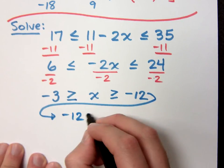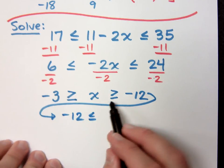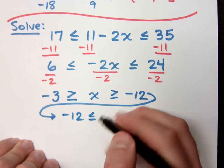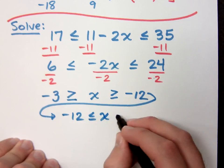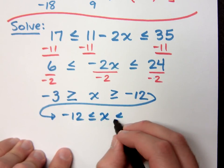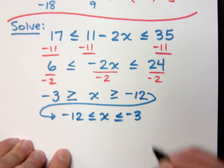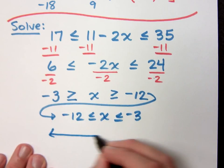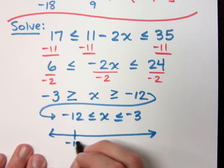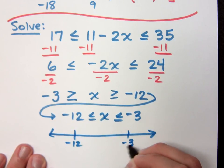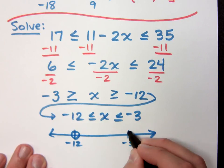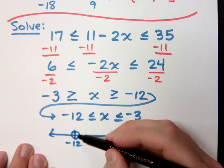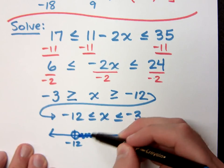Because see, notice how it's pointing to the negative 12? It still has to be pointing back to the negative 12. Less than or equal to x, which is less than or equal to negative 3. By rewriting it this way, it makes it very easy to graph, because things are in order now. So negative 12 to negative 3, I do these nice round blue circles and x's in between here.